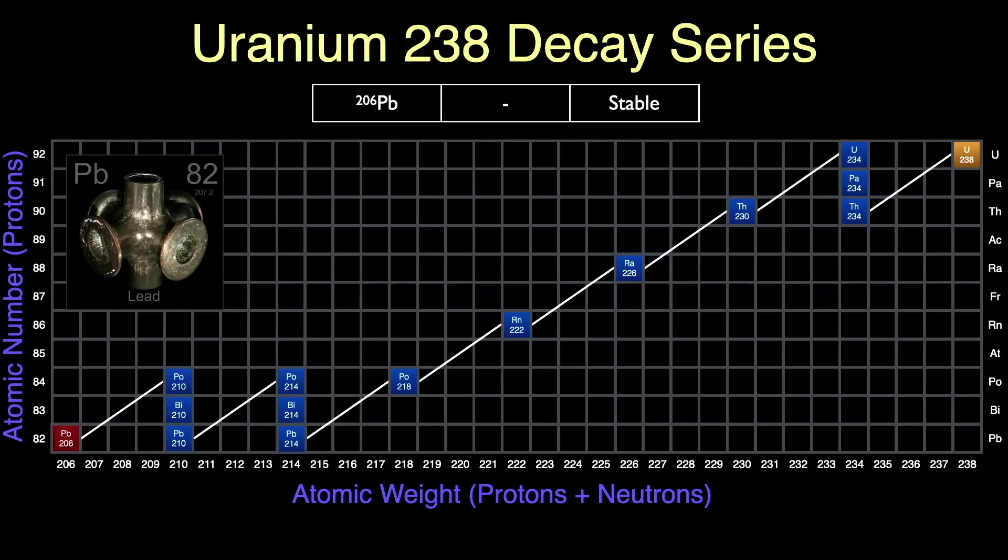This polonium finally decays by alpha into lead-206, which is stable and not radioactive. Quite a rollercoaster ride from uranium to lead, passing through three isotopes of polonium. Since Earth is about 4.5 billion years old, and the half-life of uranium-238 is also 4.5 billion years, about one-half of the uranium-238 on Earth has decayed to lead. There are other decay chains that also account for other polonium isotopes, but I think I've made my point.